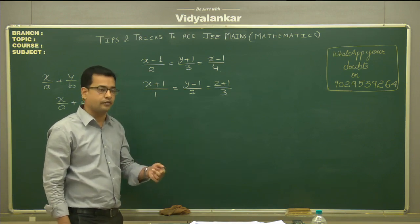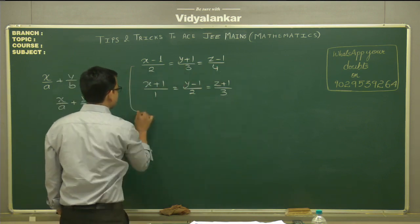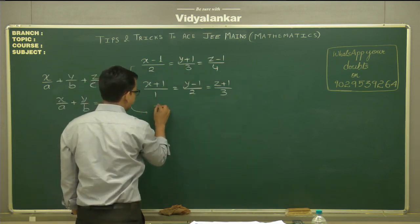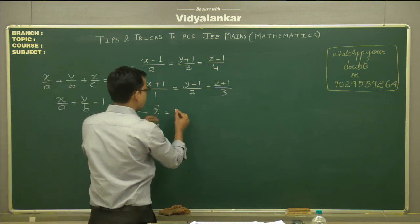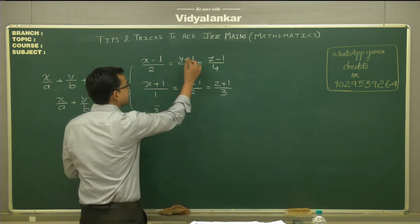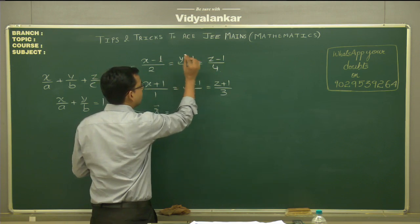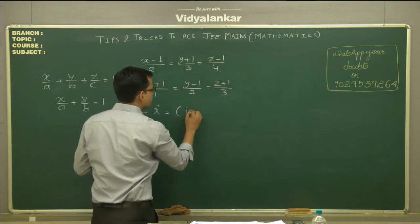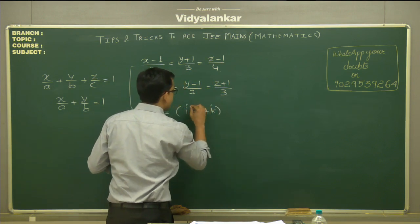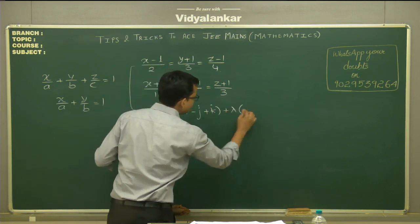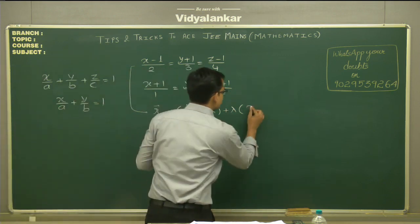So in vector form, we write this equation as r, that represents a random variable vector on the line, equal to a. a means the point from where the line is passing. Now in this case, the point is (1, -1, 1), so in vector it will be i - j + k, plus lambda times the direction ratios of that line. Like in this case, it is 2, 3, 4.